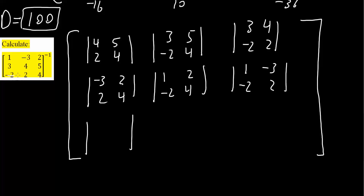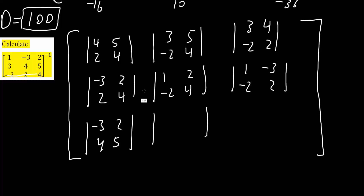For the last three: I draw a horizontal and vertical line and get negative 3, 2, 4, 5. Next one, I want this element replaced: horizontal, vertical — I write 1, 3, 2, 5. Finally, the last one: horizontal, vertical line — I get 1, negative 3, 3, and 4.